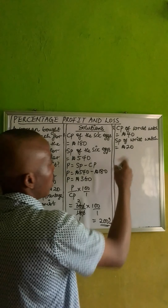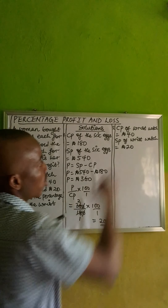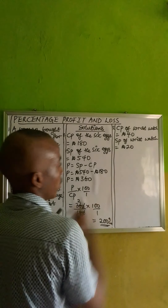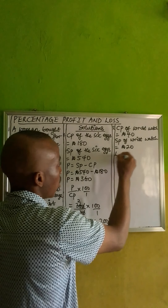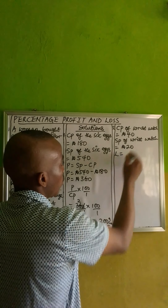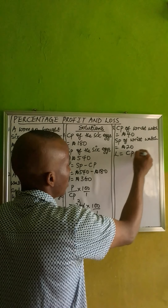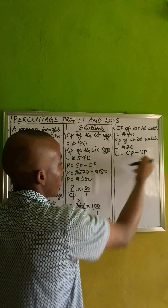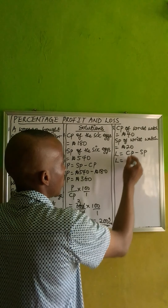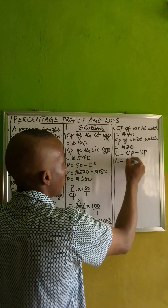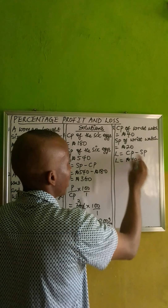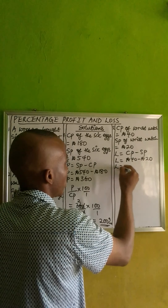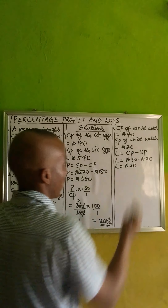So let's get from here. We can see that our cost price is greater than our selling price, so there is a loss. Let's get the loss. Loss will be equal to the CP minus the SP, which is cost price minus selling price. Loss will be equals: the cost price is 40 Naira minus selling price, 20 Naira. The loss here will be 20 Naira.